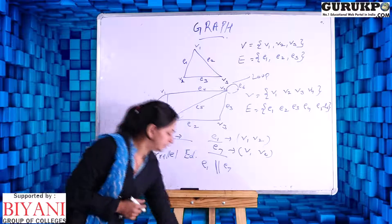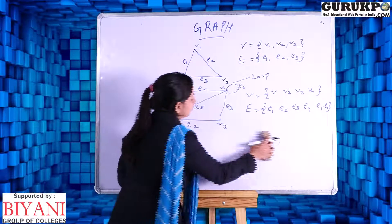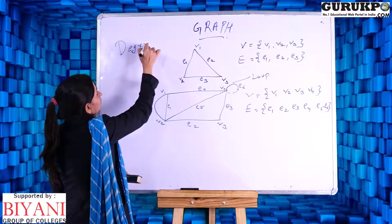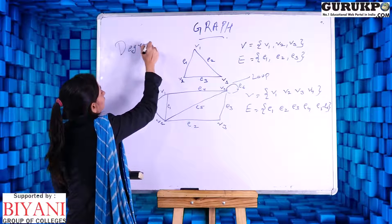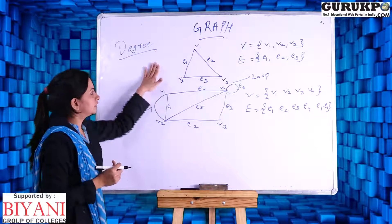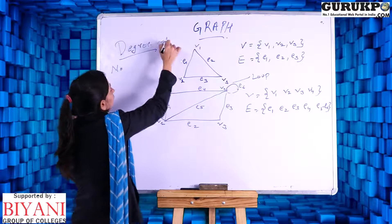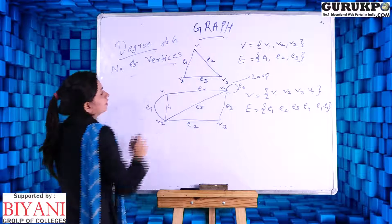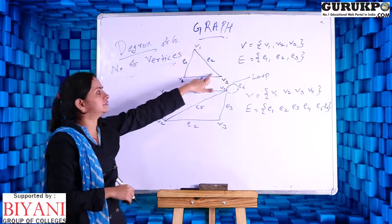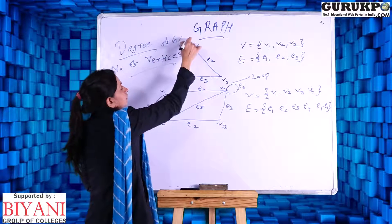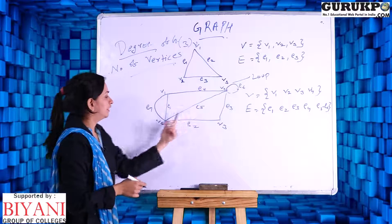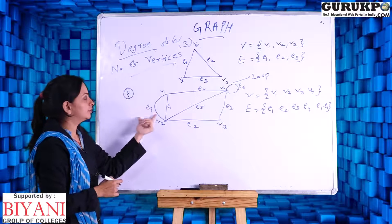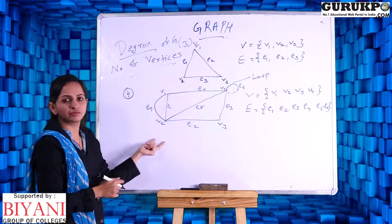These are the types of edges, and vertices combined with edges is called a graph. Now let us discuss the degree of the graph. The degree of the graph is the number of vertices in the graph. For example, in the first example there are three vertices V1, V2, V3, so the degree of the graph is 3. In the second example with V1, V2, V3, V4, the degree of the graph is 4.